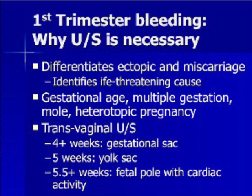The primary utility of ultrasound in the emergency evaluation for first trimester bleeding and pain is to rule out the major life-threatening diagnosis, namely ectopic pregnancy. Additional information can be obtained for normal pregnancies such as gestational age, multiple gestation, molar pregnancy, and heterotopic pregnancy. With transvaginal ultrasound, the earliest sonographic finding is the presence of a gestational sac after four weeks, followed by a yolk sac at five weeks, and a fetal pole with cardiac activity just before six weeks.